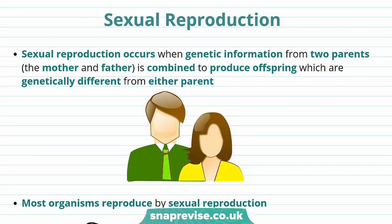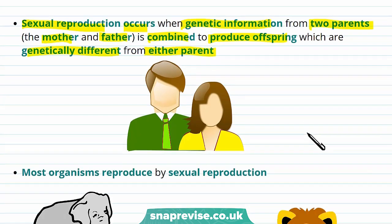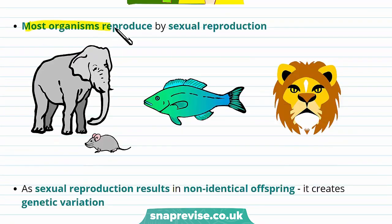Reproduction is when organisms make more of themselves, and one way of doing this is through sexual reproduction. Sexual reproduction occurs when genetic information from two parents — the mother and the father — are combined to produce offspring which are genetically different to either parent. Sexual reproduction is quite common; most organisms reproduce this way, including humans, elephants, fish, and tigers.